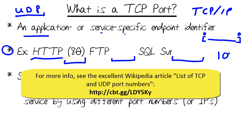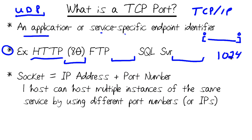A TCP port is a 16-bit unsigned value, so there's a finite number of TCP ports available in the world — 65,535 to be exact. You know how we're moving from IPv4 to IPv6 due to address depletion? I predict that the time will come in which we'll have to expand the port range to accommodate additional services.